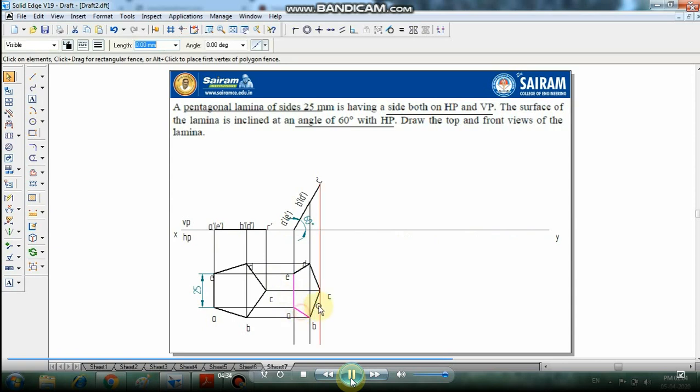Select all the entities and make them a group, so we can move by selecting the edge EA and keep point E on the line. Then rotate by selecting E to A and keep this on the reference.